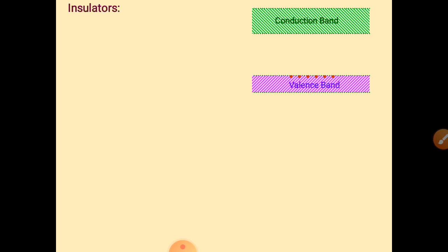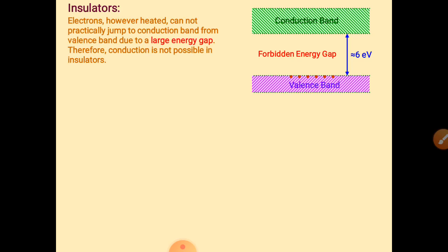For insulators, the valence band and conduction band have an even larger gap than in metals and semiconductors. More gap means more energy is required for the electron. The forbidden gap energy for a typical insulator is about 6 electron volts. For diamond, the gap is about 7 electron volts. Since electrons cannot obtain this much energy from any source, electron transition is very difficult in insulators.